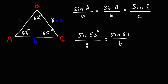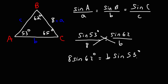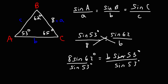Make sure your calculator is in degree mode, because if it's in radian mode you might get something else. Let's cross multiply. We're going to have 8 times sine of 62 degrees, and that's going to equal B times sine of 53 degrees. To get B by itself, we need to divide both sides by sine of 53. So 8 times sine of 62 divided by sine of 53 is equal to 8.84. So that's our B value.